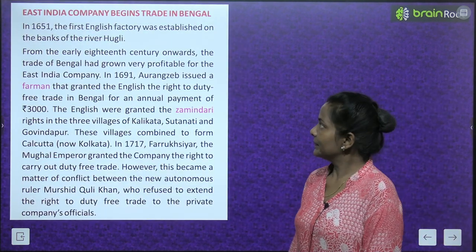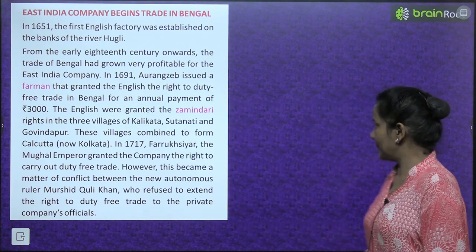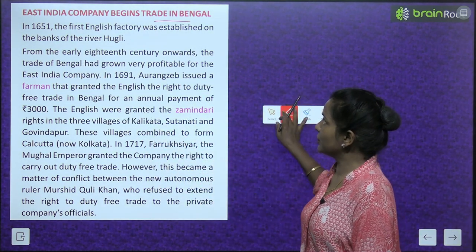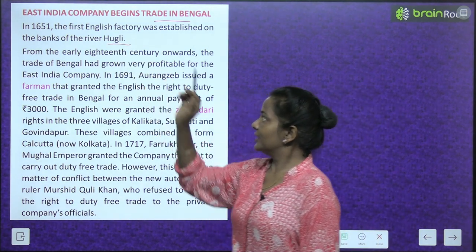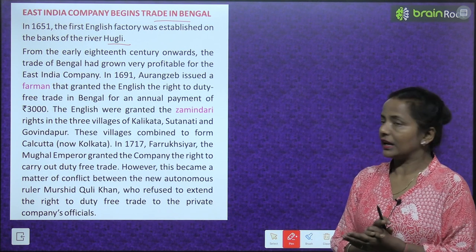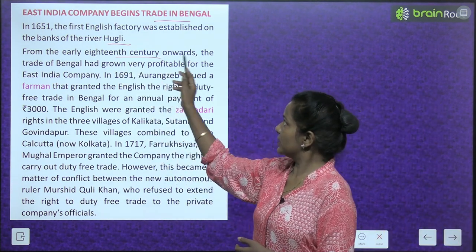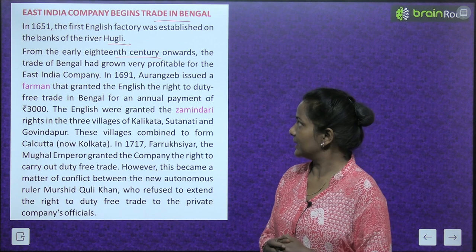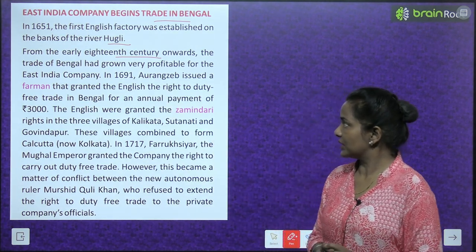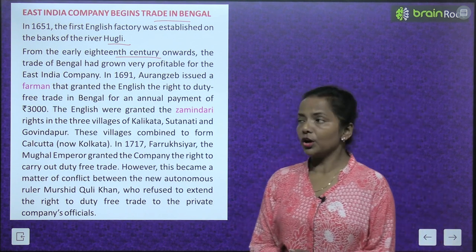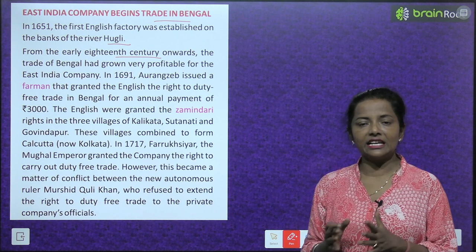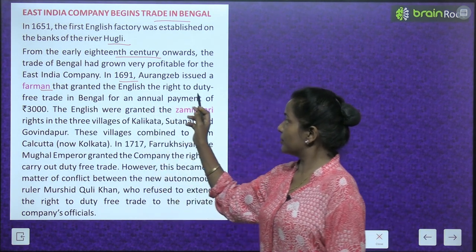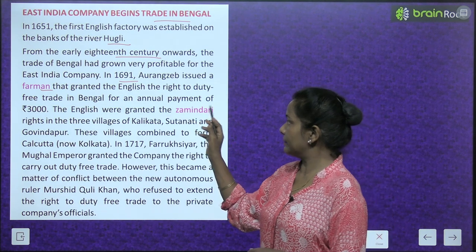East India Company begins trade in Bengal. In 1651, the first English factory was established on the banks of River Hugli. From the early 18th century onwards, the trade of Bengal had grown very profitable for the East India Company. In 1691, Aurangzeb issued a farman that granted the English the right to duty-free trade in Bengal for an annual payment of Rs. 3000.